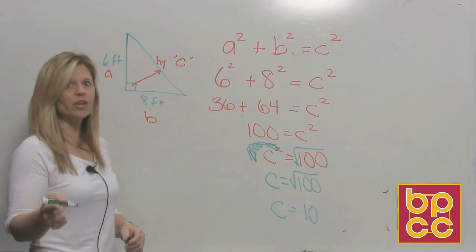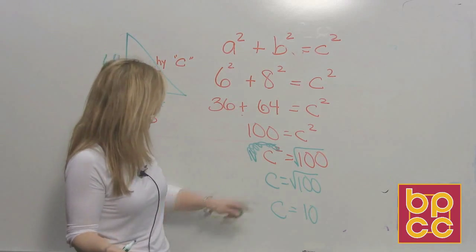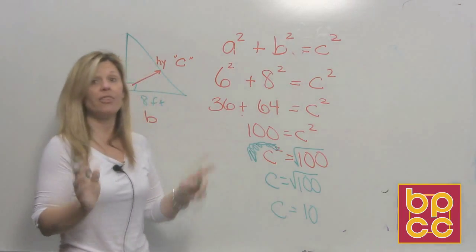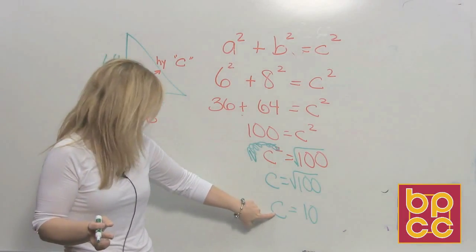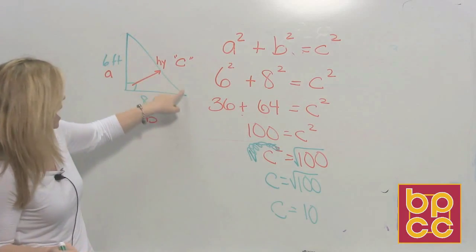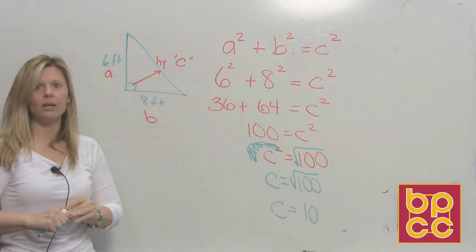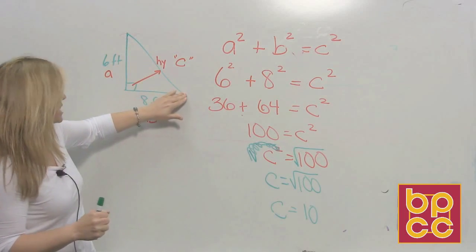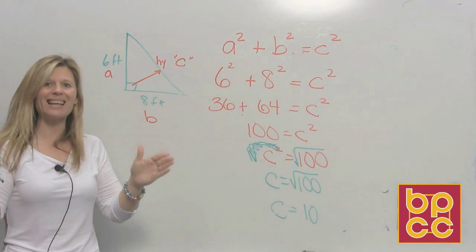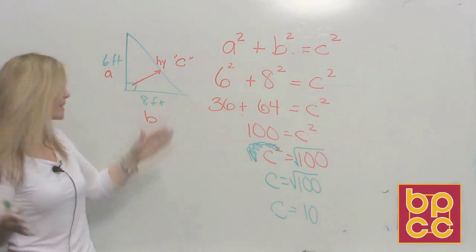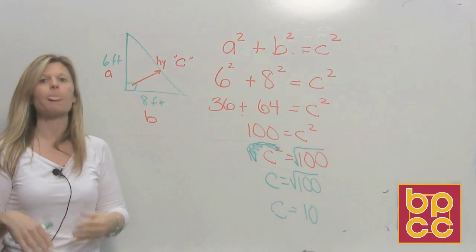Now, I know what you're thinking. You're saying, Ms. Black, you forgot to put the plus or minus. Think about this a minute. C stands for the hypotenuse of a right triangle. And the hypotenuse is a side. And we're trying to find out the length of that side. Could the length of that side be a negative number? No.